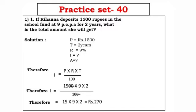Let's go with practice set 40. You are going to substitute the values of P, R, and T to find out I, that is interest. So, I is equal to 1500 into 9 into 2 upon 100. After cancellation, I is equal to 15 into 9 into 2, which is equal to Rs. 270. So your interest is Rs. 270.